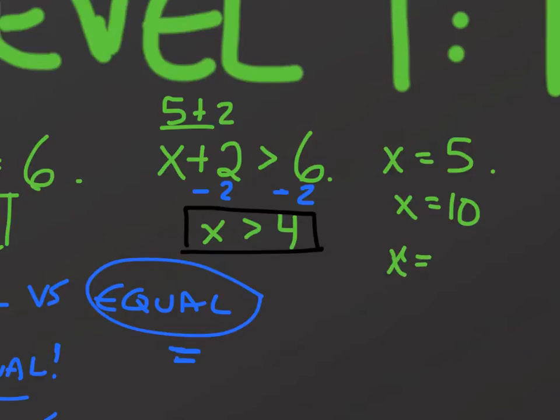x could be a trillion. And this inequality would still be true, because it would be 1 trillion and 2, which is obviously greater than 6.